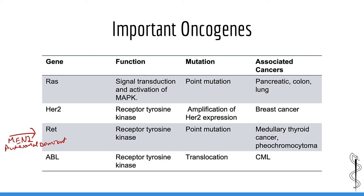Unlike tumor suppressors which code for proteins involved in control of the cell cycle and DNA repair, oncogenes code for receptors and proteins involved in signal transduction — that is, proteins involved in signal pathways for cell division and cell survival.